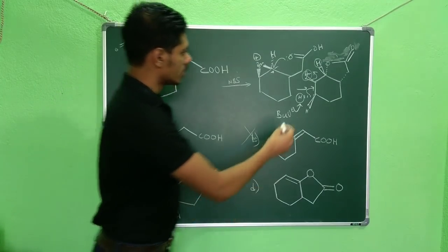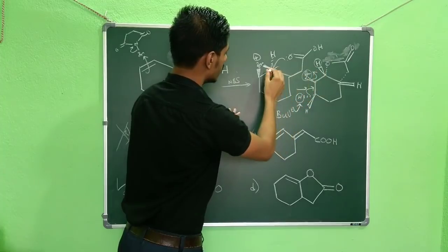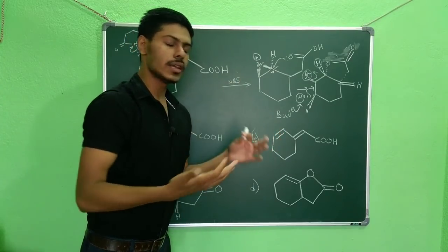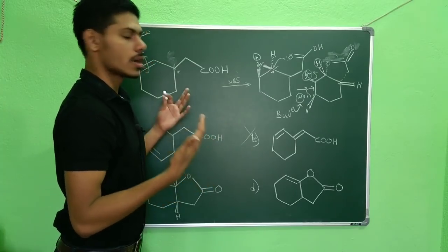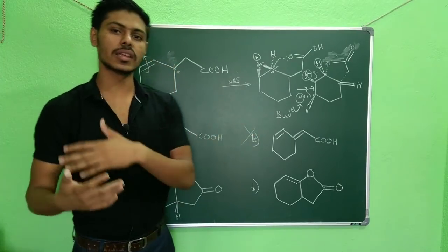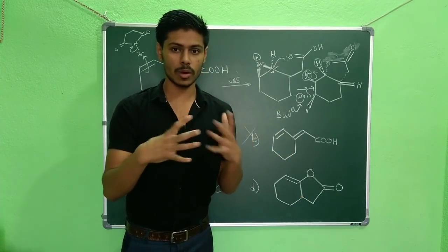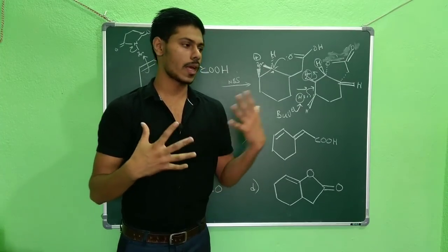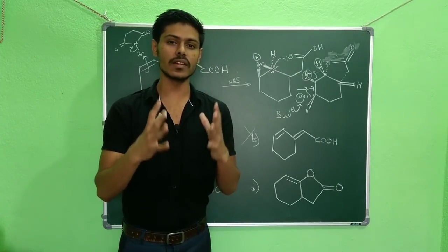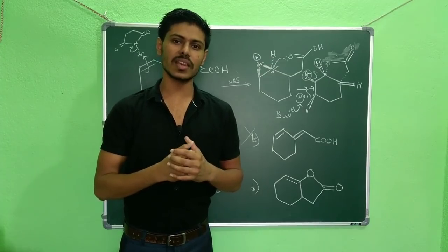If we instead consider the bromonium ion forming on the bottom face with attack from the top, we arrive at the same result — both faces give identical conclusions. Also note that NBS can be replaced by NIS (N-iodosuccinimide) or simple bromine or iodine; the key concept is halonium ion formation. Halolactonization is a very important topic that appears in almost every CSIR NET exam. Thank you for watching and best of luck!